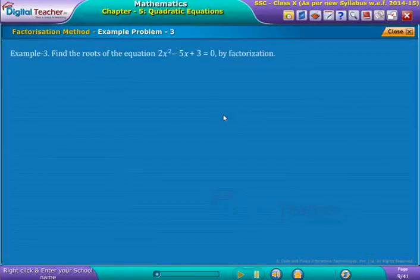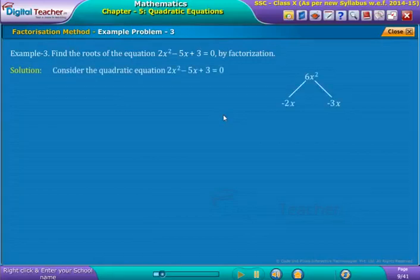Find the roots of the Equation 2x² minus 5x plus 3 is equal to 0 by Factorization. Solution: We observe that the given Equation is in Standard Form. Here, for factorizing, we have to split the Middle Term.